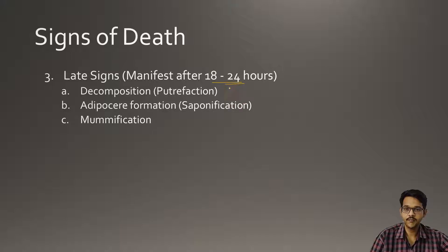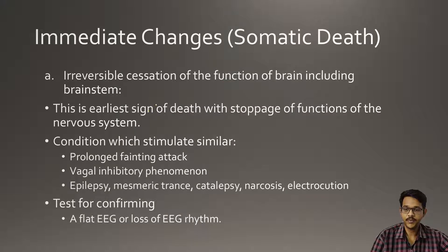After 24 hours, within 18 to 24 hours, the late changes occur. These include decomposition, also known as putrefaction, then adipocere formation, saponification, and mummification. We will discuss each of these in detail in future videos. Today we will discuss about immediate changes, that is somatic death.